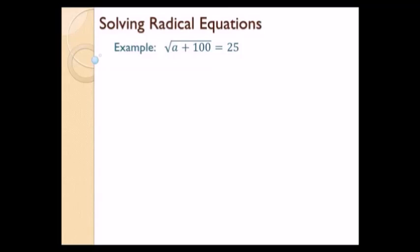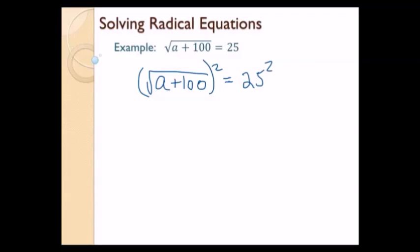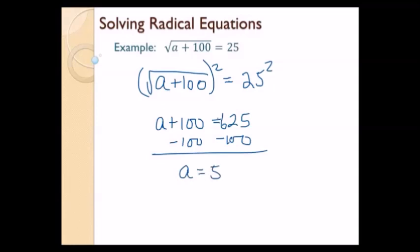Let's solve the equation: square root of a plus 100 equals 25. First step, isolate the radical — it already is isolated, so I can go ahead and do step 2: raise both sides to the power of the index. The index here is 2, so I'm going to square both sides. So I have the square root of a plus 100 squared equals 25 squared. When I square a square root, I just get rid of the radical, so on the left-hand side I'm just left with a plus 100 equals 625. So now subtract 100 — a equals 525. Let me make sure it works: 525 plus 100 is 625, square root of 625 is 25. It works. There's my final answer.